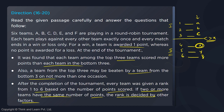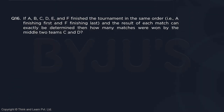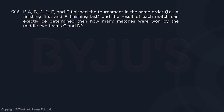So this is the information given. Let us move on to the question. A, B, C, D, E and F finish the tournament in the same order — A came first, B second, C third. The top group is over D, E and F, and the result of each match can be exactly determined.